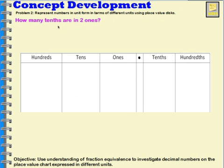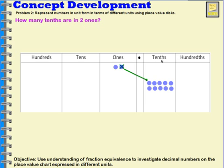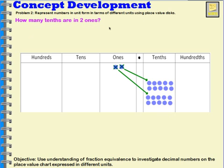So how many tenths are in two ones? I can represent two ones on the place value chart by drawing two discs in the ones column. To figure that out, I can decompose that one into ten tenths — so I no longer have that one, I have ten tenths. I can do the same thing with the other one. So instead of having two ones, I have twenty tenths. Two ones is equal to twenty tenths.